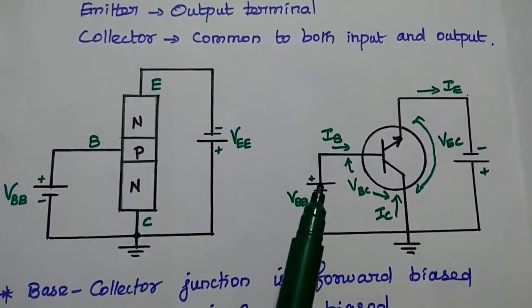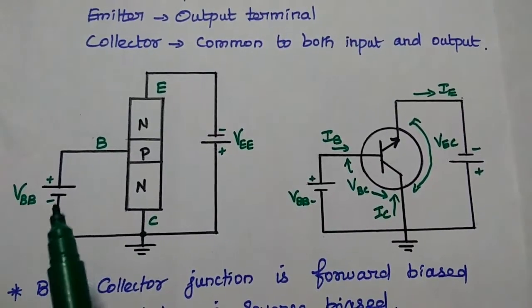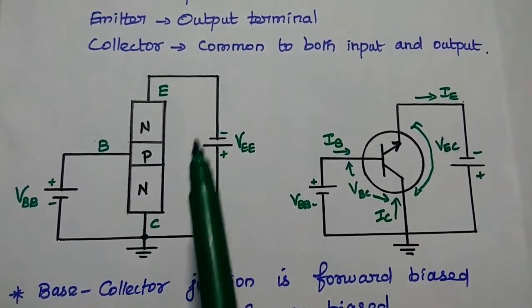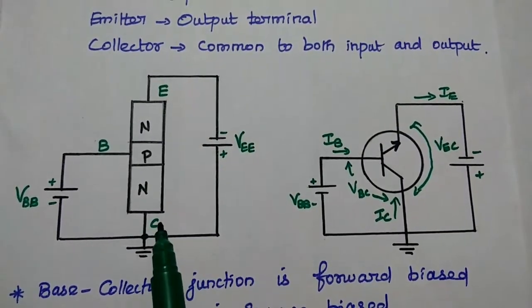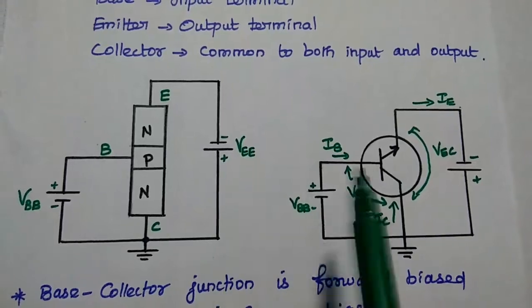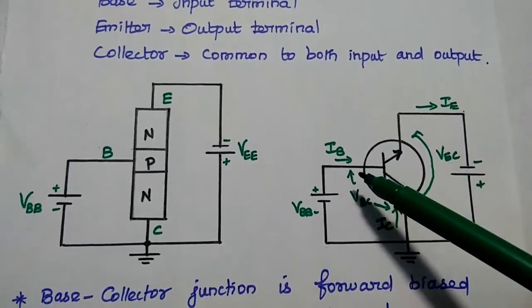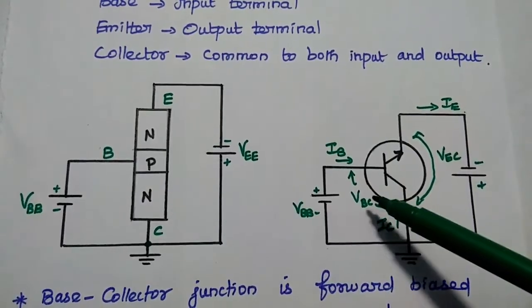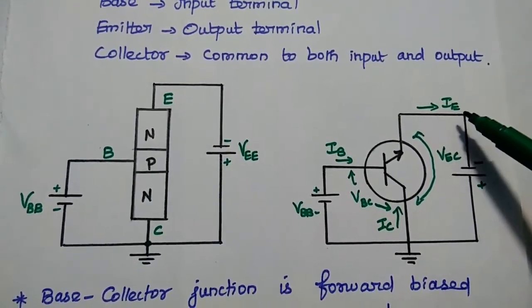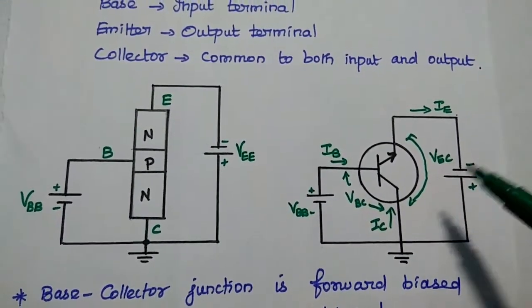This is the circuit diagram of common collector configuration. The input is applied between base and collector, and the output is taken between emitter and collector, so the collector is common to both. The base current is the input current, base-collector voltage is the input voltage, emitter current is the output current, and emitter-collector voltage is the output voltage.